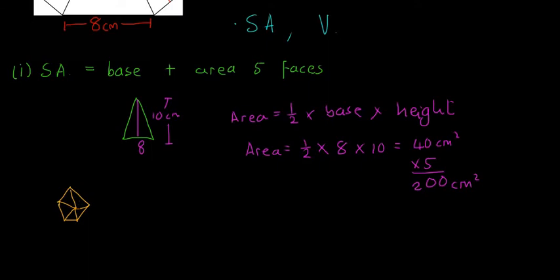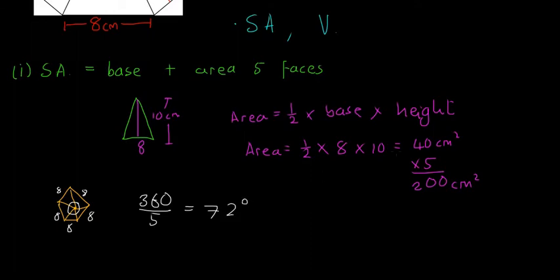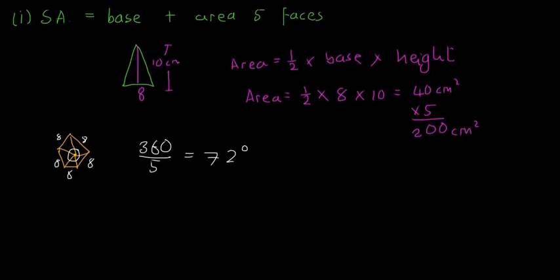We have a centre dot, and each of the sides is 8 centimetres. We have a full circle in the middle and five separate triangles. In a full circle there are 360 degrees, and since we have five triangles, dividing 360 by 5 gives us 72 degrees — that's the top angle in each of those triangles. So we have an isosceles triangle with 8 on the bottom and 72 degrees at the top.